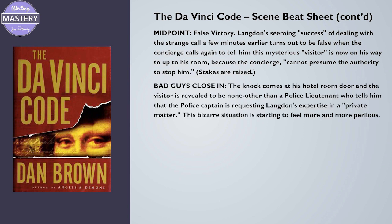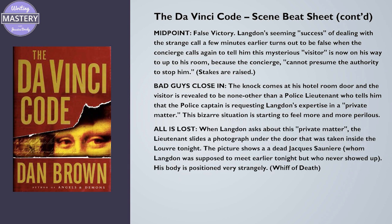Beat seven: Bad Guys Close In. The knock comes at his hotel room door and the visitor is revealed to be none other than a police lieutenant who tells him that the police captain is requesting Langdon's expertise in a private matter. This bizarre situation is starting to feel more and more perilous. Beat eight: All is Lost. When Langdon asks about this private matter, the lieutenant slides a photograph under the door taken inside the Louvre Museum tonight — showing a dead Jacques Saunier, whom Langdon was supposed to meet earlier that night but who never showed up, his body positioned very strangely.